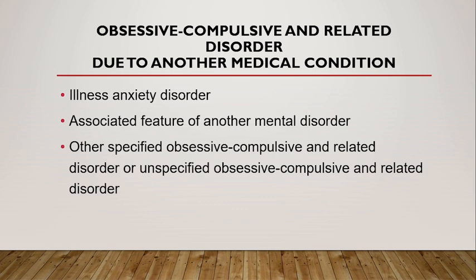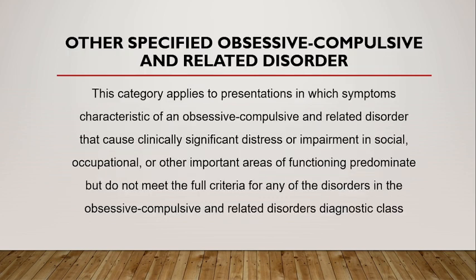Other specified obsessive compulsive and related disorder or unspecified obsessive compulsive and related disorder: these diagnoses are given if it is unclear whether the obsessive compulsive and related symptoms are primary, substance-induced, or due to another medical condition. The other specified category applies to presentations in which symptoms characterized by an obsessive compulsive related disorder cause clinically significant distress or impairment in social, occupational, or other important areas of functioning, but do not meet the full criteria of any disorder in the obsessive compulsive and related disorder diagnostic class.